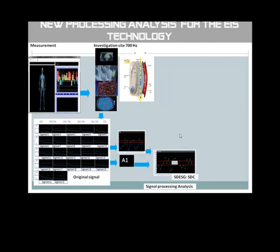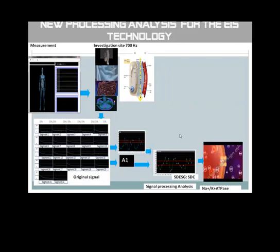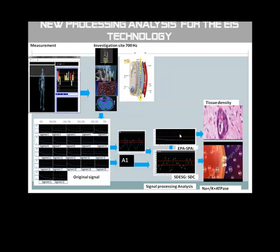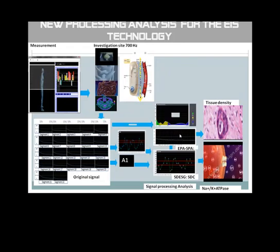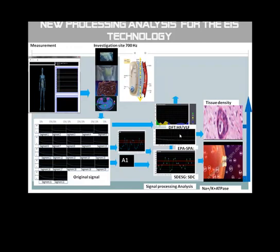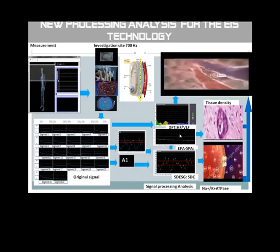Step 3: second derivative ESG from the ESG graph and value A1, and calculation of the parameter SDC, related to the segmental interstitial fluid sodium concentration and segmental ATP pump activity. Step 4: dynamic processing analysis and calculation of the parameter EPA SPA, related to current distribution and segmental tissue density — parameter alpha of the Kohl equation. Step 5: spectral analysis of the original signal via fast Fourier transformation and calculation of the parameter HFVLAF, related to the general interstitial to blood viscosity. Step 6: cross analysis of the segmental parameters STC, EPA SPA, and HFVLAF for the estimated tissue perfusion.